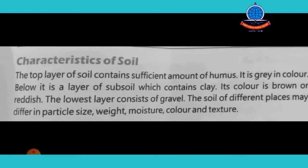The top layer of soil contains a sufficient amount of humus and is grey in colour. Below it is a layer of subsoil which contains clay, and its colour is brown or reddish. The lowest layer consists of gravel. The soil of different places differs in particle size, weight, moisture, colour and texture.